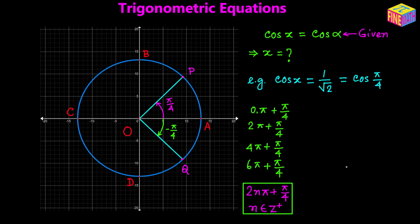Now let's talk about OQ. OQ is currently making a negative pi over 4 angle with the positive direction of the x-axis. We can write negative pi over 4 as 0 times pi minus pi over 4. If we rotate OQ one full circle counterclockwise, this angle becomes 2pi plus negative pi over 4.